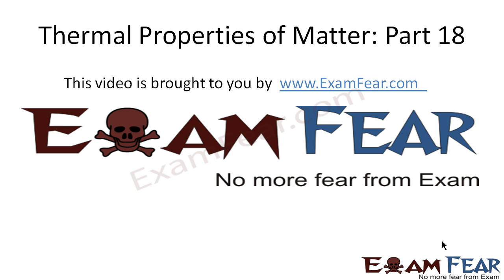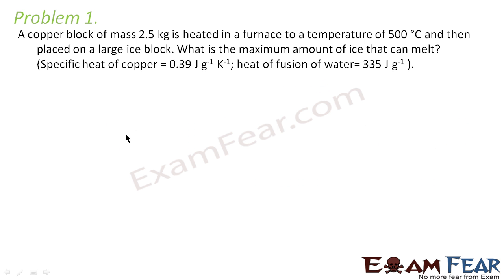Now let us look at certain problems. The problem states that a copper block of mass 2.5 kg is heated in a furnace to a temperature of 500 degree Celsius and then placed on a large ice block. What is the maximum amount of ice that can melt? Initially the copper block was heated, then placed on ice, so heat transfer took place from the copper block to the ice block.